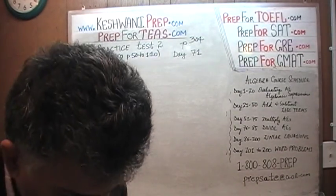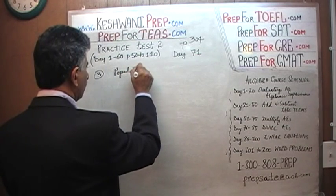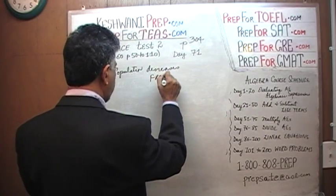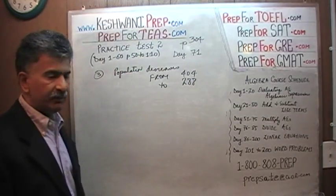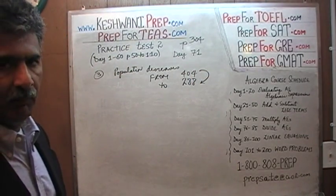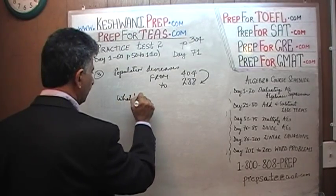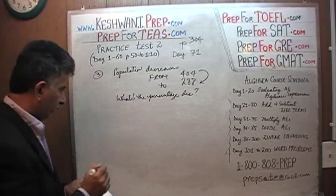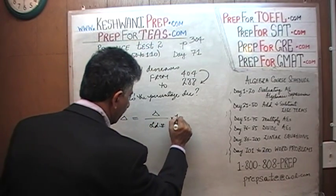In problem number 3, we are dealing with the percentage change concept. We are told that we have a population that decreases from 404 to 288. We must know where we are starting from and where we are ending — the starting point and ending point is the key when doing percentage change. The question simply is: what is the percentage decrease? We know that the percentage change is equal to the change over the old number, times 100.